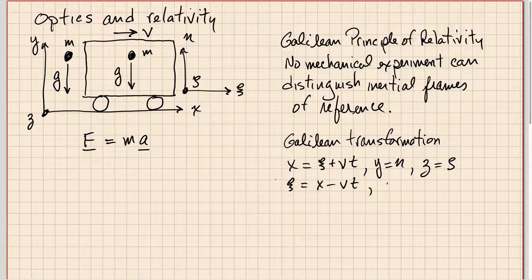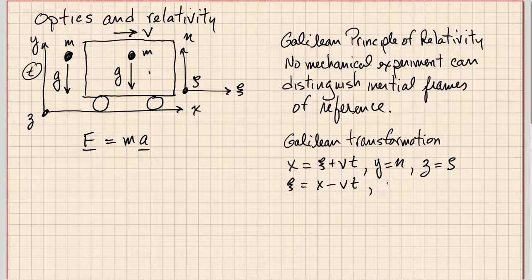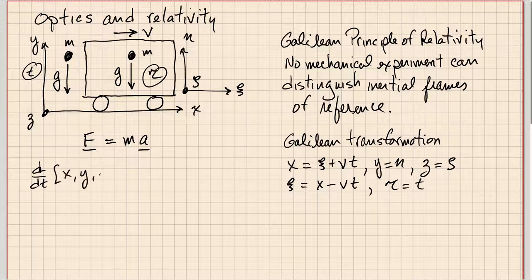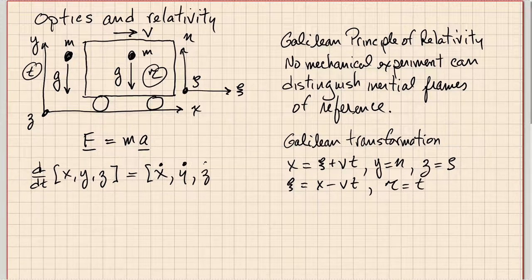We assume that if people on the earth measure time with a clock ticking off t, and inside the moving vehicle they have one ticking off tau, then t and tau are the same — tau equals t. There is a universal time in all systems. Looking at the time derivatives of position x, y, z — using dot notation where x-dot represents the time derivative of x — that's just velocity.